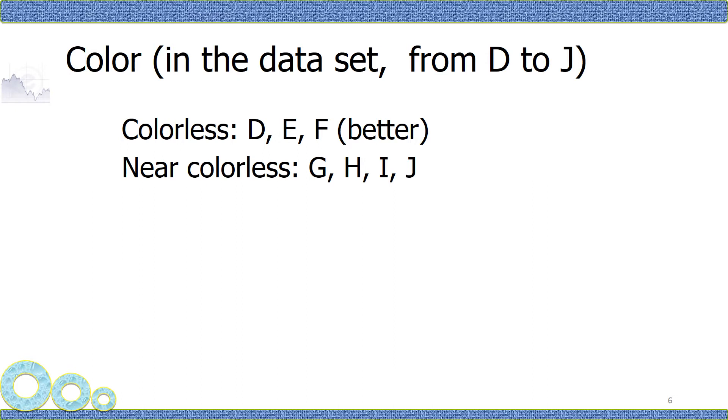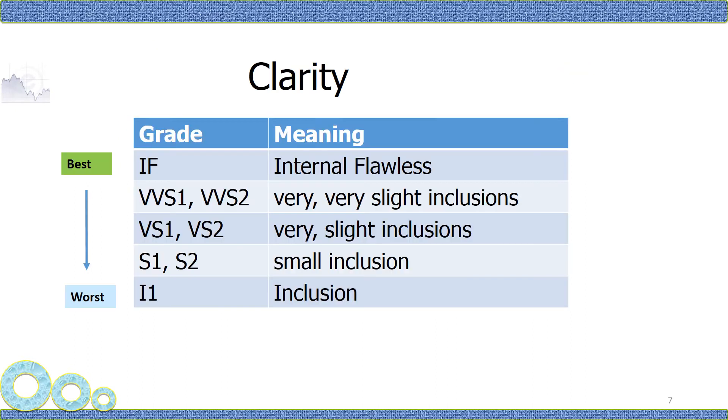Color means whether the diamond is colorless or has a faint yellowish color. So the best colors are colorless, and the next one is near colorless. There are many levels or grades for clarity. As you can see, IF is the best, I1 is the worst.